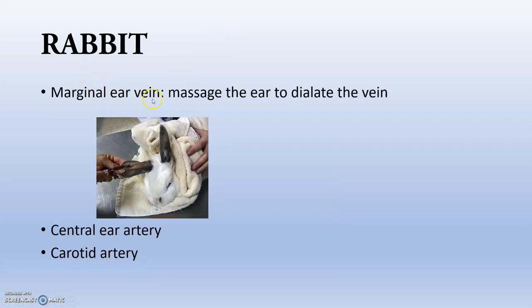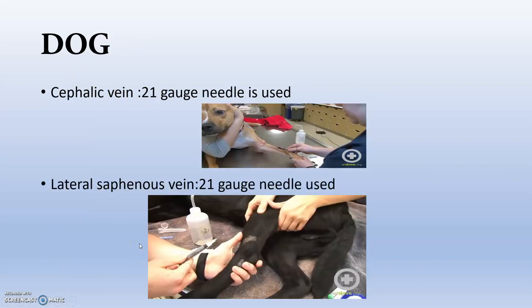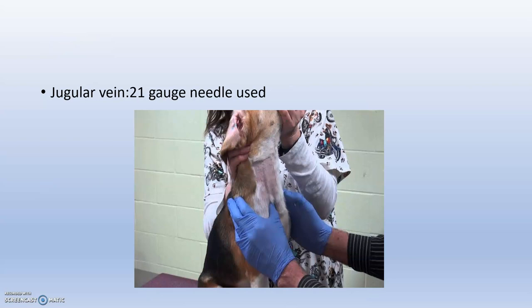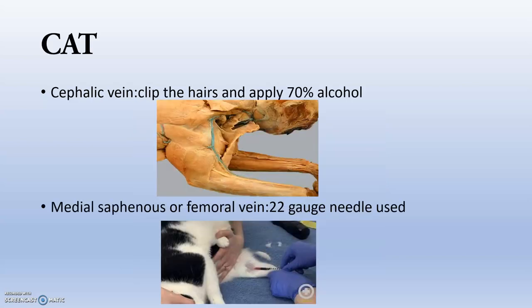For rabbit, the marginal ear vein is used, and sometimes the carotid artery and central artery are also used. In the case of dog, we use the cephalic vein, which is mainly in the forelimb, and for the hind limb we use the lateral saphenous vein. Sometimes the jugular vein can also be used if the animal is easy to handle. For cats, we use the cephalic vein and the medial saphenous or femoral vein.